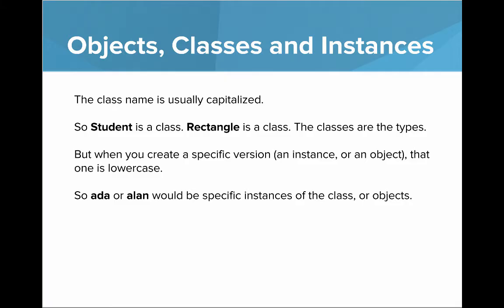The classes are the types. But when you create a specific version, when we create an instance or an object, that one is lowercase. So Ada or Alan will be the specific instances of the class, or the objects.